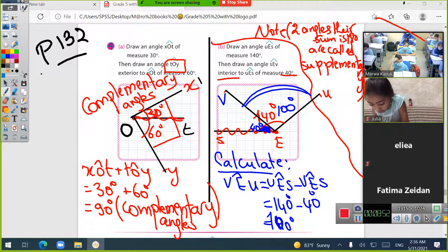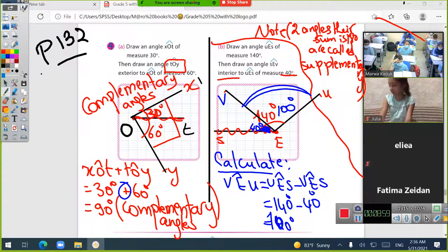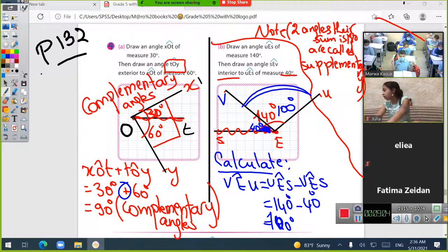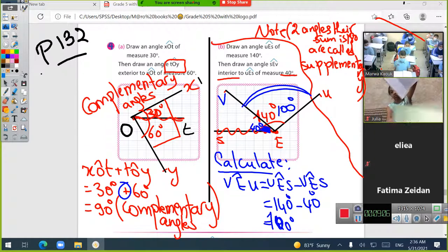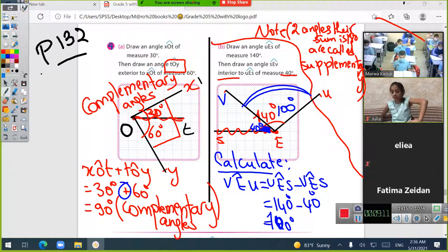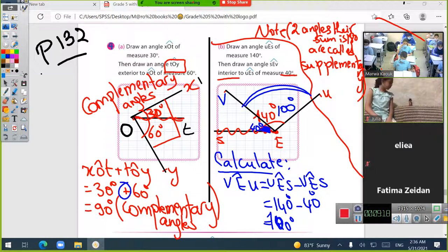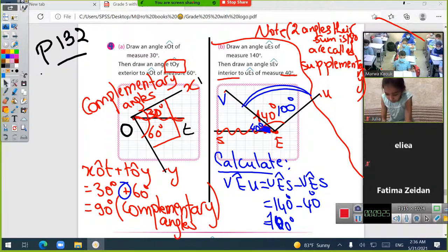When one angle is inside another, I should subtract. When it's outside, I add. If two angles together make 180, they're supplementary. But here, since they are inside each other, I cannot talk about supplementary angles. Is it clear? Copy it and redo it at home since it's included in the final exam and it's very important.